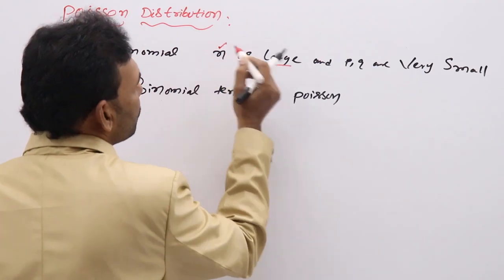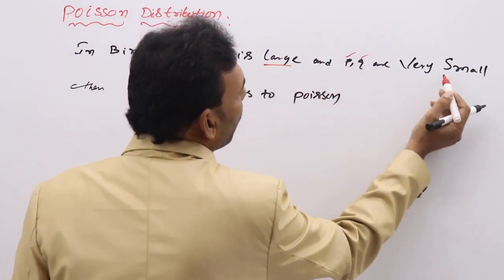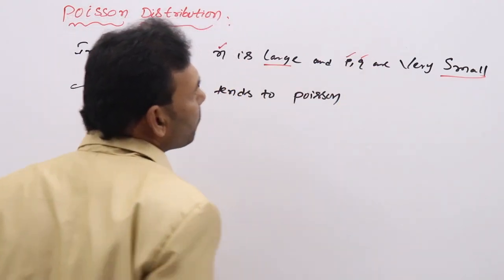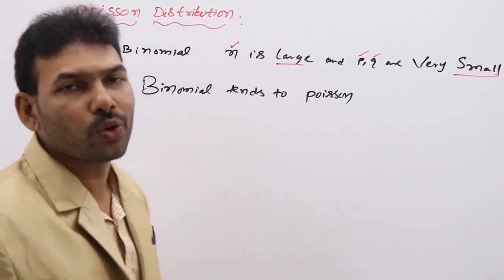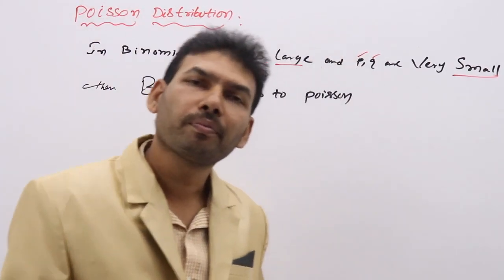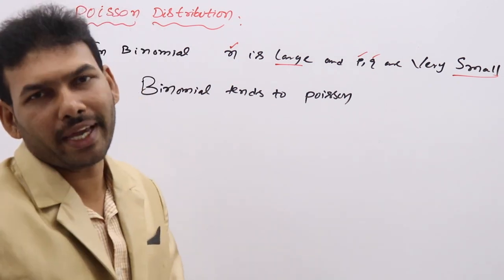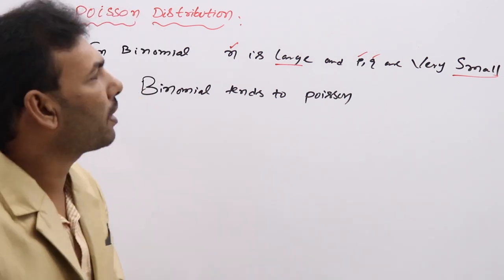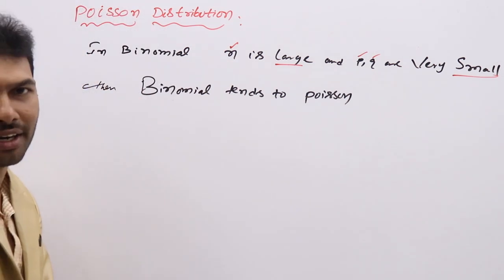When n is large and p and q are very small, that binomial distribution only tends to Poisson.